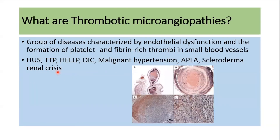So what are thrombotic microangiopathies? These are a group of diseases characterized by endothelial dysfunction and the formation of platelet and fibrin-rich thrombi in small blood vessels. This includes diseases like hemolytic uremic syndrome, thrombotic thrombocytopenic purpura, HELLP syndrome in pregnancy, DIC, malignant hypertension, antiphospholipid syndrome, and scleroderma renal crisis.